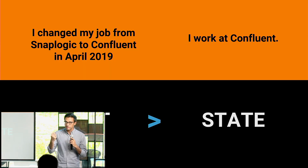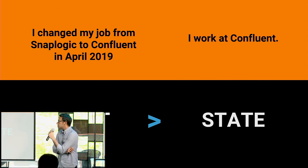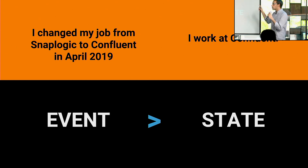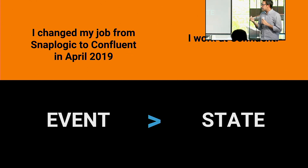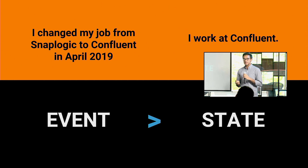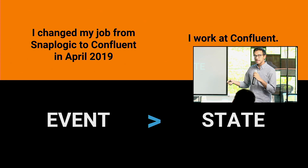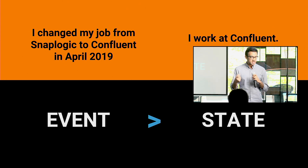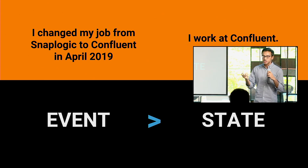The big realization the founders of Confluent had when they were at LinkedIn and created Kafka was really understanding that events hold way more interesting information than the state themselves. For example, I can say I changed my job from my prior state to current state at a particular time — this has a lot more context than just saying where I work today. And the big realization was that although there was so much valuable information in these events, there was no real data storage for events. Hadoop has a file system, a database has a table, but for events there was really no place to put them except logs hidden somewhere and not accessible to everyone. So that was really the genesis of Kafka.